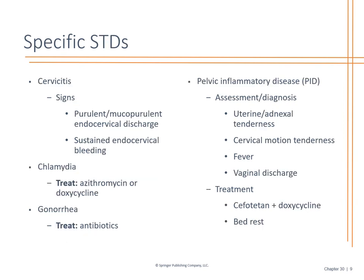Cervicitis presents with purulent or mucopurulent discharge and possible endocervical bleeding. For chlamydia treatment, doxycycline is now more recommended by the CDC than azithromycin (Zithromax). However, azithromycin is a one-time dose, while doxycycline is taken for seven days. Gonorrhea is also treated with antibiotics. For pelvic inflammatory disease, identify the causative agent, determine why they have PID, and develop a treatment plan with good, close follow-up.